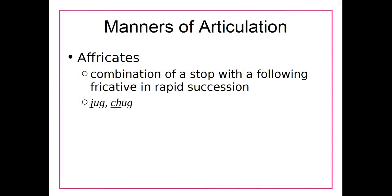English also has what's called an affricate, which is a combination of a stop and a fricative. There actually is a stop in an affricate, but right after the stop there's a fricative — so these are really two sounds that happen very close together. By convention, these are described as an affricate rather than two separate sounds. When we look at how to describe these sounds technically, you'll see what we mean by this being two sounds described as one.